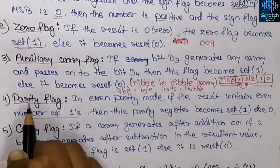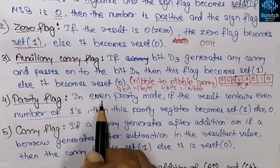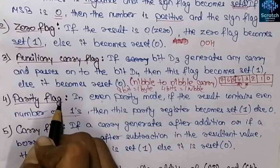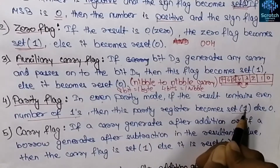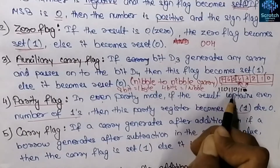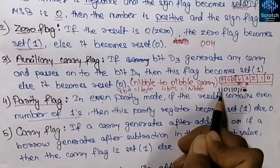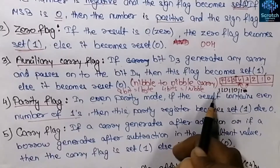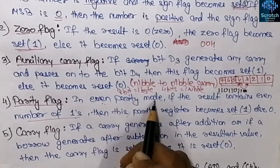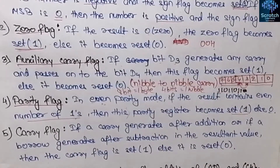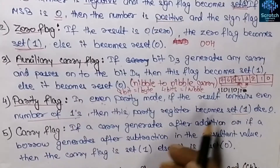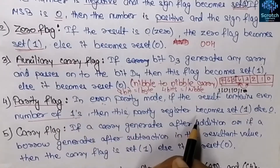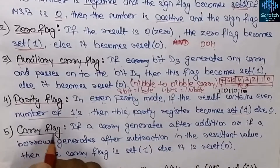For the parity flag in even parity mode: if the result contains an even number of ones, the parity flag becomes set to 1. For example, if a number has six ones, the parity flag will contain 1. If there is an odd number of ones in even parity mode, it will contain 0. In odd parity mode the whole process is reversed: if the result contains an even number of ones the parity register becomes 0, otherwise 1.